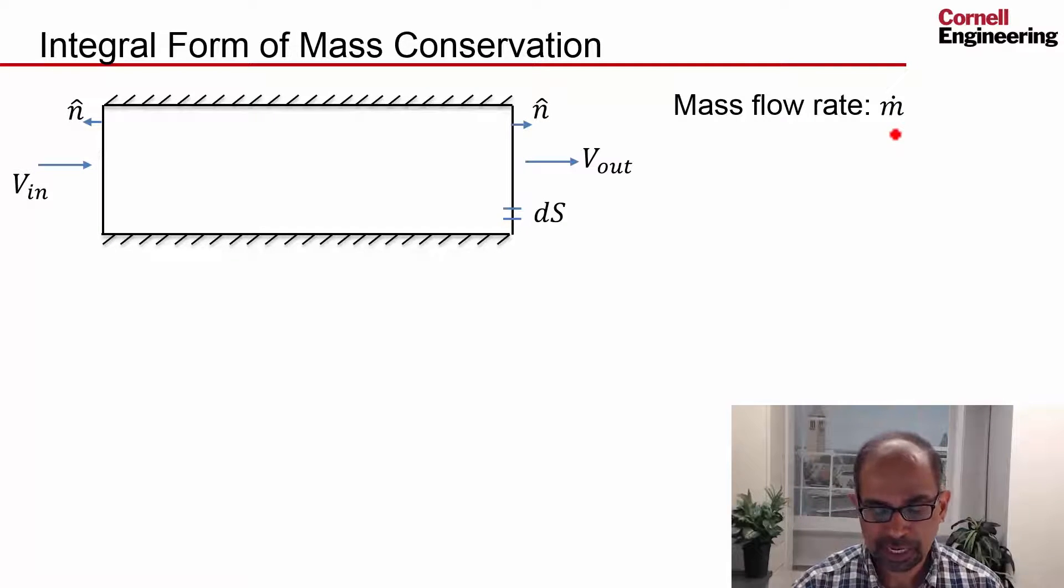And for steady flow we intuitively know that the mass coming in should be equal to the mass going out, because there can be no mass accumulation here with the steady flow assumption.